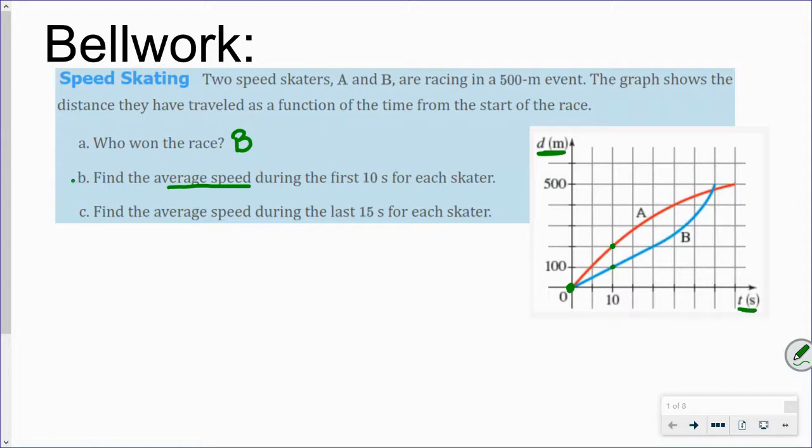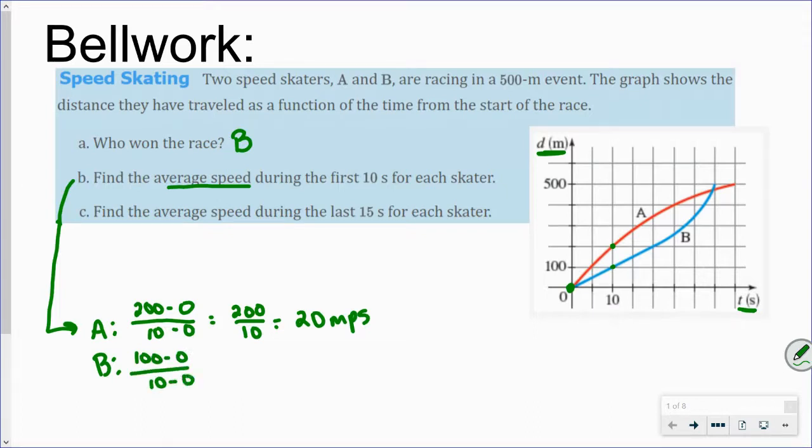Okay, so for skater A, I'll come down here. Your change in Y would be 200 minus 0. Okay, and then your x direction would be 10 minus 0. So that's 200 over 10, which is 20, I think it's in meters per second. Okay, so for racer B, they only went 100, so it would be 100 minus 0 over 10 minus 0, which is 100 over 10, which is 10 meters per second.